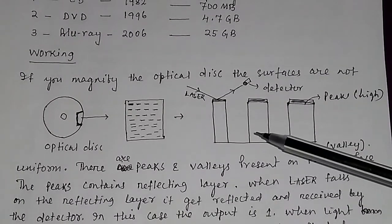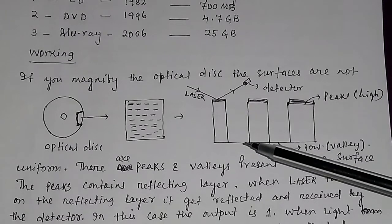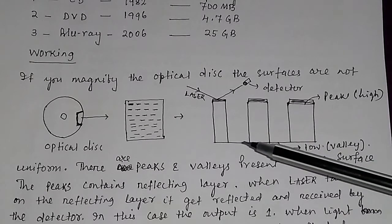But when light falls on this valley, it is not reflected. The light is not reflected on this valley, so the output is zero.